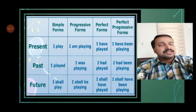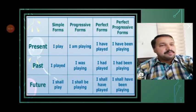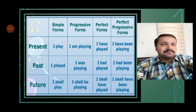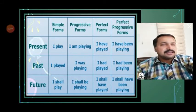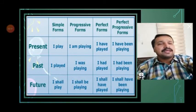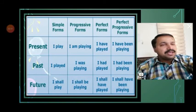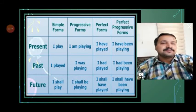In future progressive tense: I shall be playing, she will be playing, they will be playing, we shall be playing, you will be playing. In future perfect tense: I shall have played, we shall have played, he will have played, she will have played, Raju will have played, they will have played.